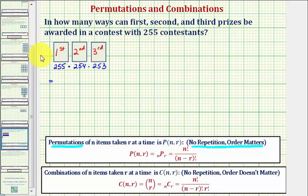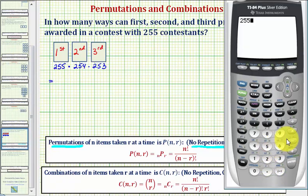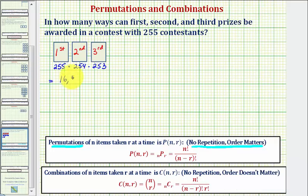Let's go to the calculator. 255 times 254 times 253 equals 16,386,810. So this is the number of ways first, second, and third place prizes can be awarded.